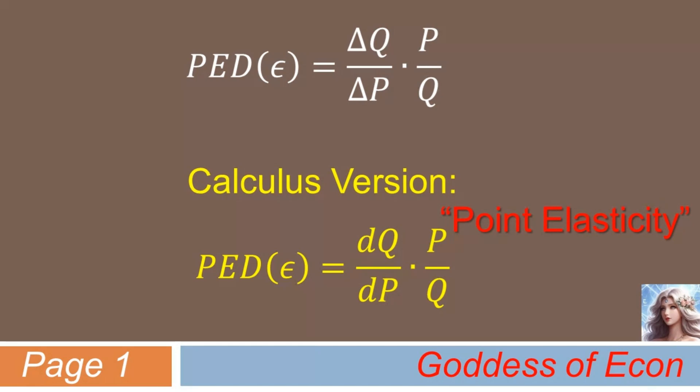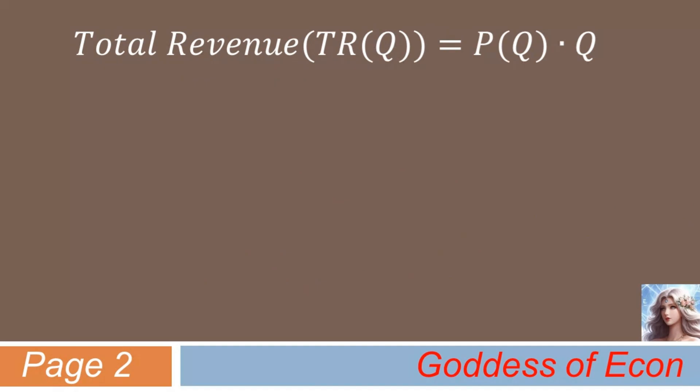Next, let's think about its potential linkage with the revenue of a firm. The revenue or total revenue of a firm can be simply written as price times quantity sold, Q. Please note that here, price appears as a function of Q, rather than the reverse. For your information, P expressed as a function of Q is called an inverse demand function in economics. Now, let's derive the equation for MR, marginal revenue, from this total revenue equation.